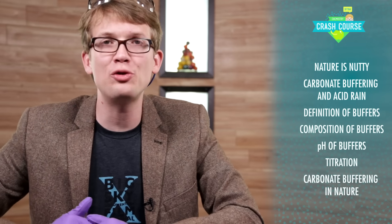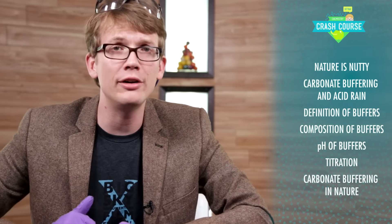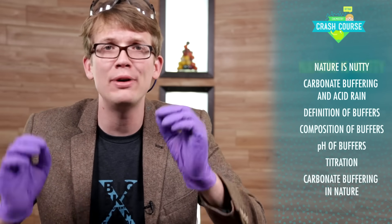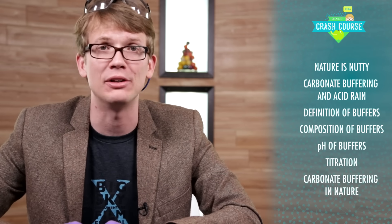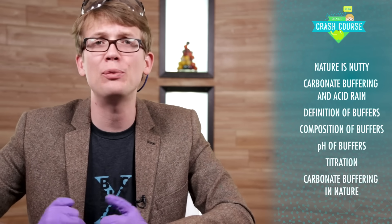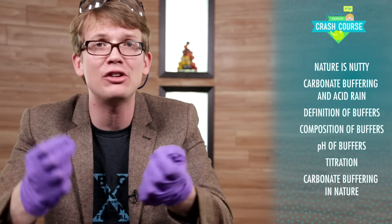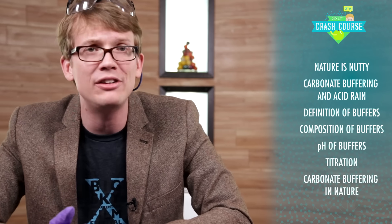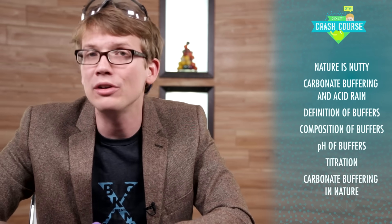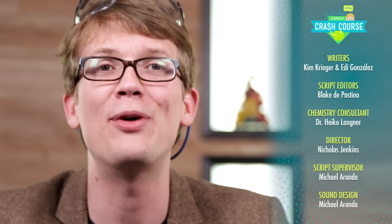Thanks for watching this episode of Crash Course Chemistry. You learned that some bodies of water, like the Clark Fork River, have natural protection from acid rain in the form of a buffering system. You learned that a buffer is a solution that resists changes in pH. You learned how to make a buffer solution, and you learned how to calculate the pH of such a solution by various methods, including titration. And lastly, you learned the importance of the carbonate buffering system in nature. This episode was written by Kim Krieger and Edie Gonzalez, edited by Blake DePastino, and the chemistry consultant was Dr. Heiko Langner. It was filmed, edited, and directed by Nicholas Jenkins, our script supervisor and sound designer was Michael LaRonda, and our graphics team was Thought Cafe.